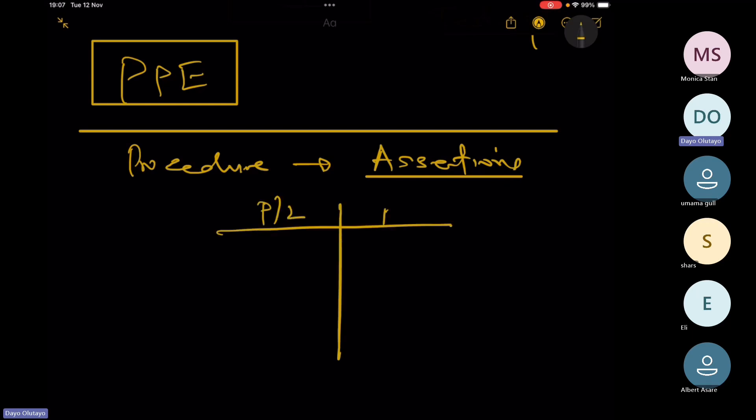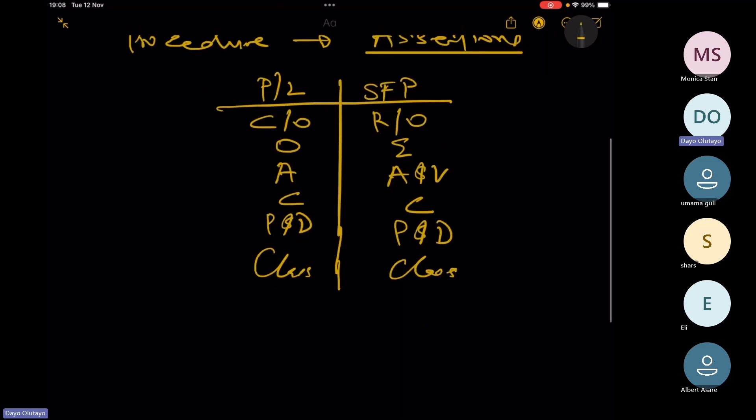It's a P or L item or it's a statement of financial position item. If it's a P or L item, you are looking at cutoff, occurrence, accuracy, completeness, P and D, and more like that. And if it's SFP, you are thinking of rights or obligation, you are thinking of existence, accuracy and valuation, completeness is also there. P and D is very important. Likewise, classification for both of them as well.